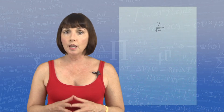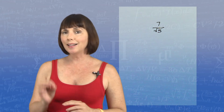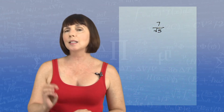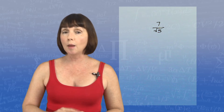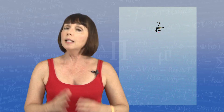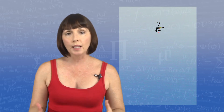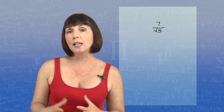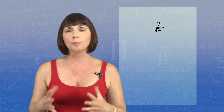If you'll remember when working with radical expressions, something like this is not considered in simplest form because there's a radical in the denominator. Similarly, when working with complex numbers, if we have the imaginary unit i in the denominator, it's not considered in simplest form.